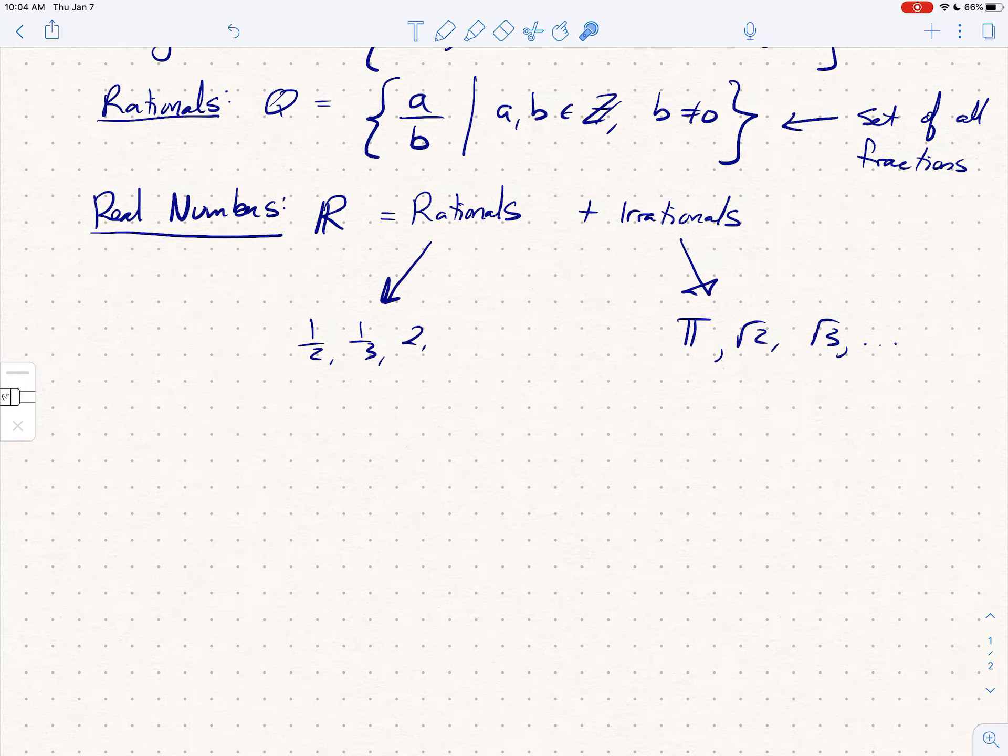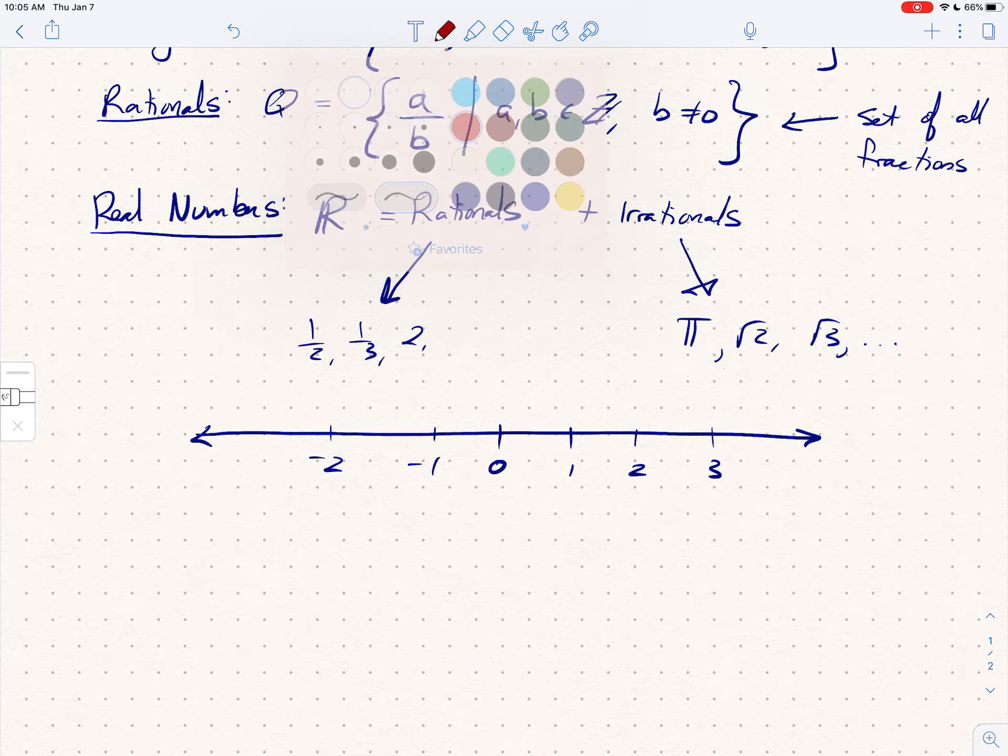And so what we need to realize is that there are actually more irrationals than there are rationals, and both of these are closely packed together. We usually think of the real numbers on a number line, and people tend to want to say, okay, there's zero and here's one and here's two and here's three and negative one and negative two. Okay, that's fine. And then maybe they'll say, okay, and there's 1/2 and there's 3/2. That's fine too.